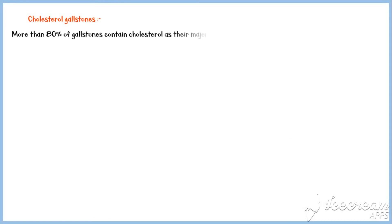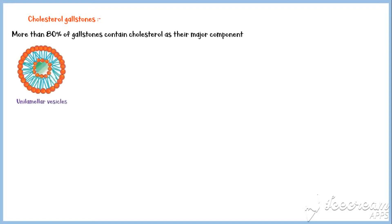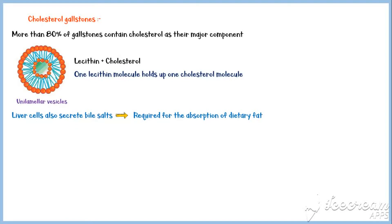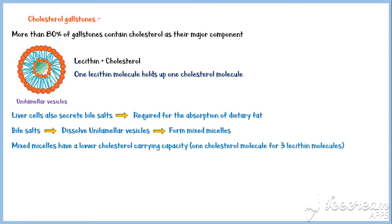More than 80% of gallstones contain cholesterol as their major component. Liver cells secrete cholesterol into the bile along with the phospholipid lecithin in the form of small spherical bubbles called unilamellar vesicles. In these vesicles, one lecithin molecule holds up to one cholesterol molecule. Liver cells also secrete bile salts, which are essentially required for the absorption of dietary fat in the small intestine. These bile salts dissolve the unilamellar vesicles within the gallbladder to form mixed micelles.